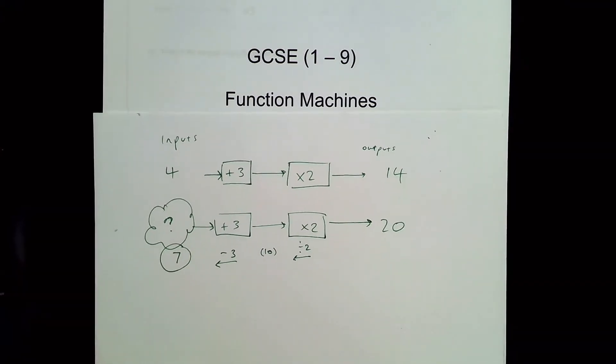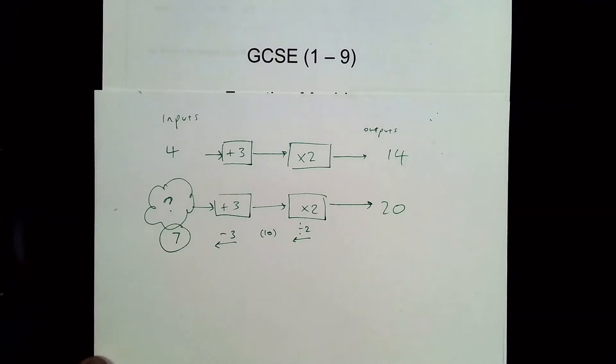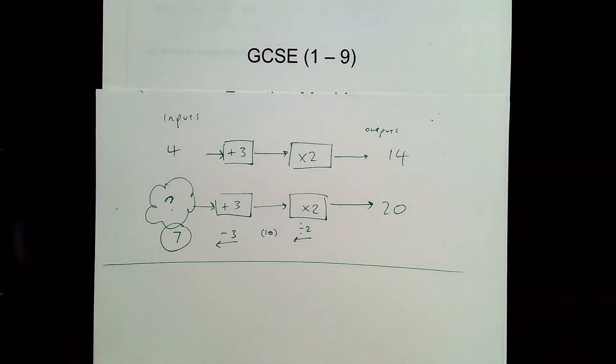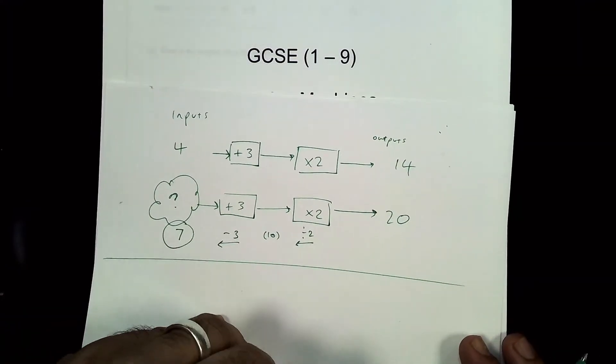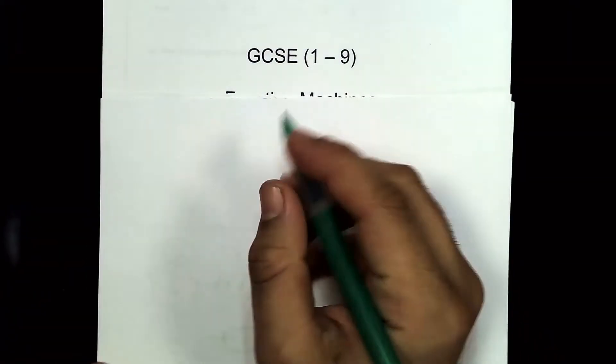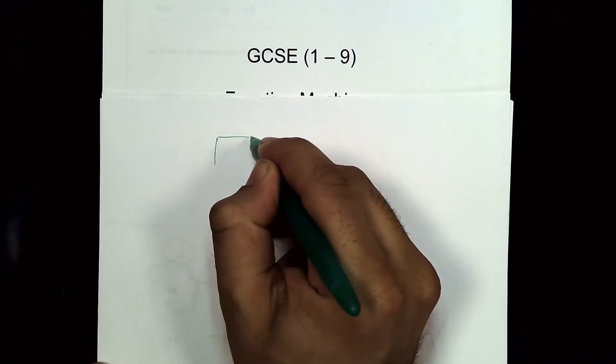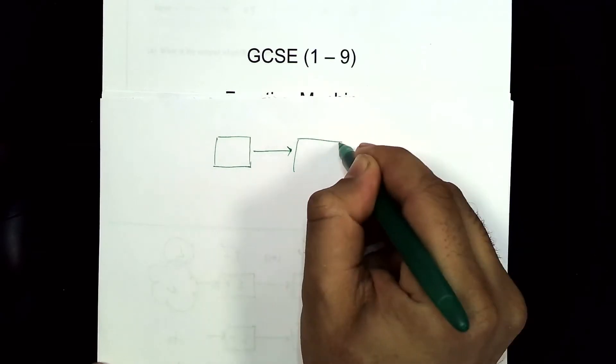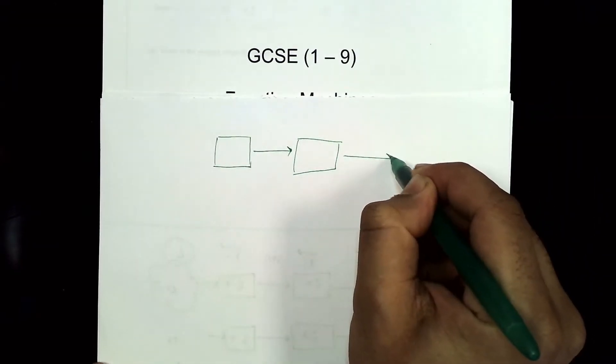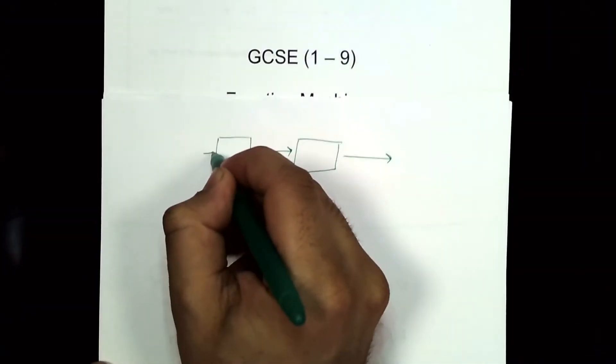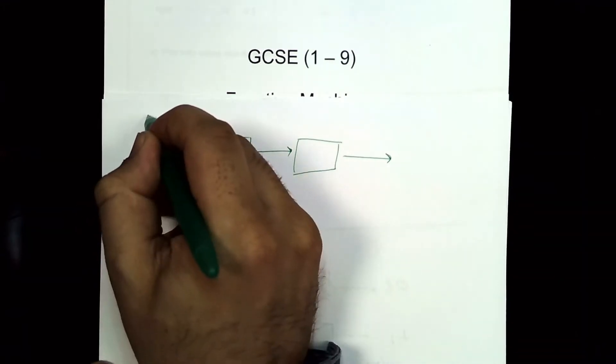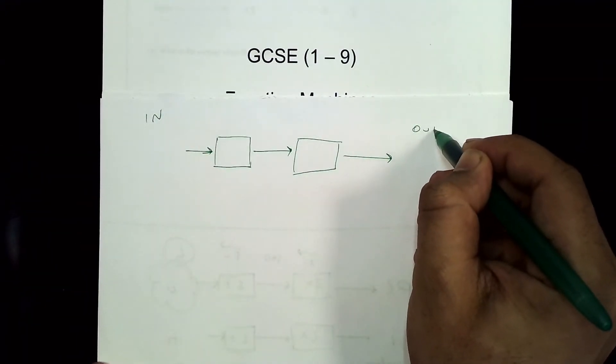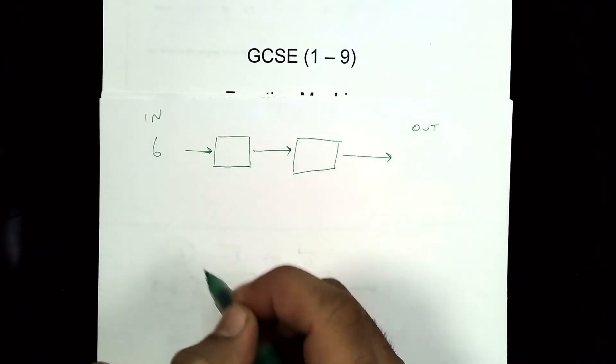One other type of question you may see is where they tell you one of the things that happens and then leave one blank, and then they give you an output and an input. For example, if I put 6 into this machine,